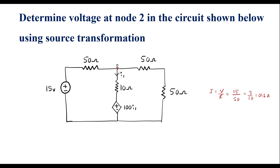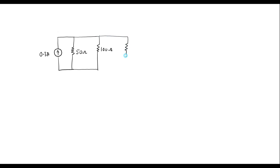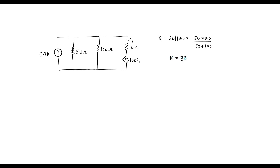Now I will connect this branch in parallel. The magnitude here is 10 and here it is 100·I1. We can observe that 50 ohm and 100 ohm are in parallel. Therefore the equivalent value is (50 × 100) / (50 + 100) = 33.333 ohm. Let me replace these two resistors by a single resistor of 33.333 ohm, with 0.3 amps as before.